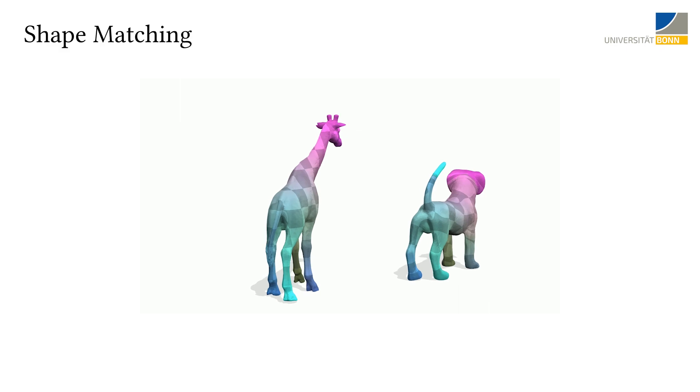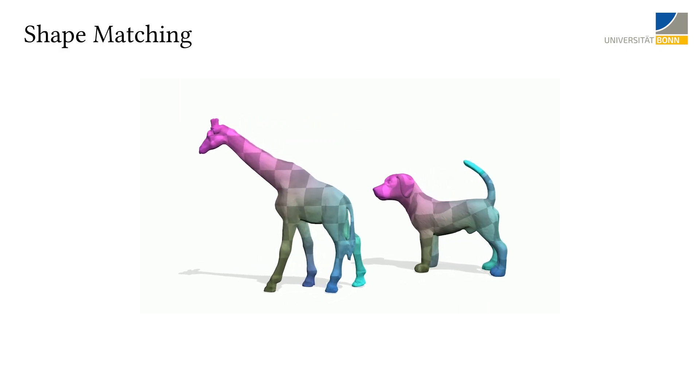To visualize correspondences, we transfer color and or texture from one shape to the other.